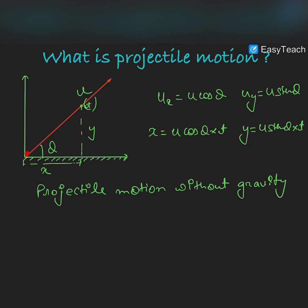If we project this stone with velocity u, its x-component would be u·cos θ and its y-component would be u·sin θ. The displacement of the stone in the x-direction is calculated by multiplying the x-velocity with time, and the displacement in the y-direction by multiplying the y-velocity with time. So the x-coordinate is u·cos θ·t and the y-coordinate is u·sin θ·t.